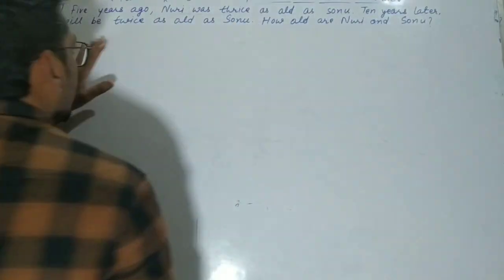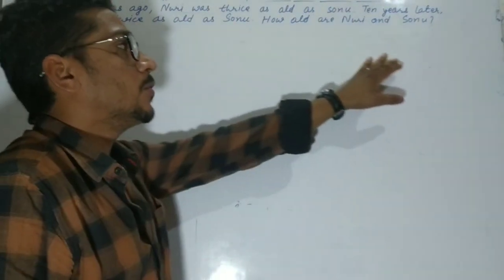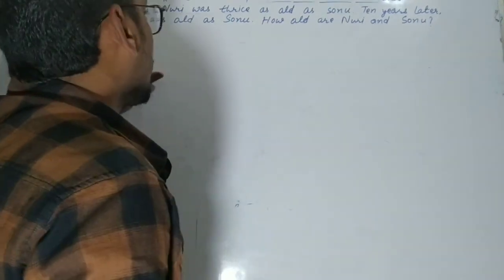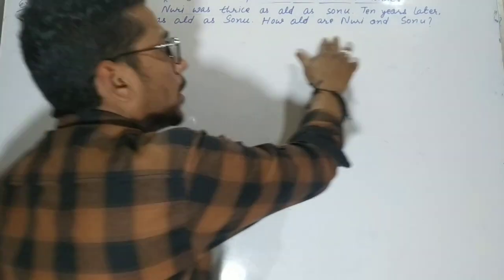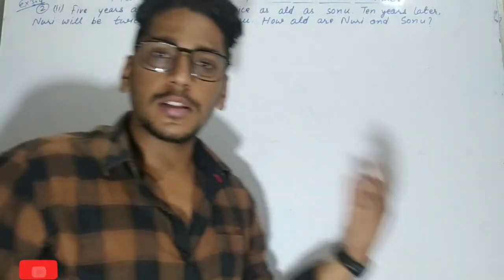The question is: 5 years ago Nuri was thrice as old as Sonu. 10 years later Nuri will be twice as old as Sonu. How old are Nuri and Sonu?